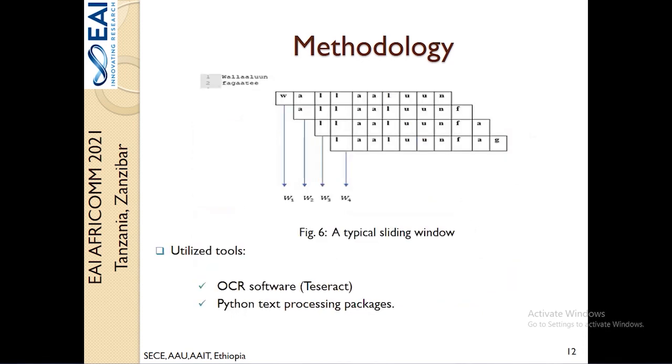In general, the window approach we followed is where we take a block of symbols, count the occurrence of the symbols, and slide the window throughout the literature to identify different blocks of symbols. To meet these requirements in a practical sense, we used optical character recognition software which helped us extract texts from PDFs and uneditable formats. We also used Python's text processing package to perform the frequency count and the entropy estimation.